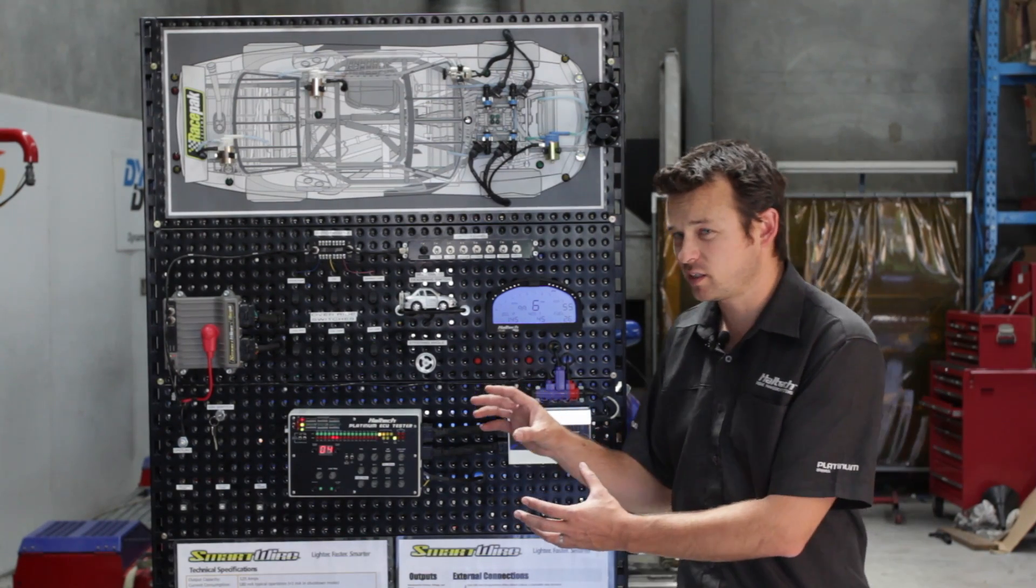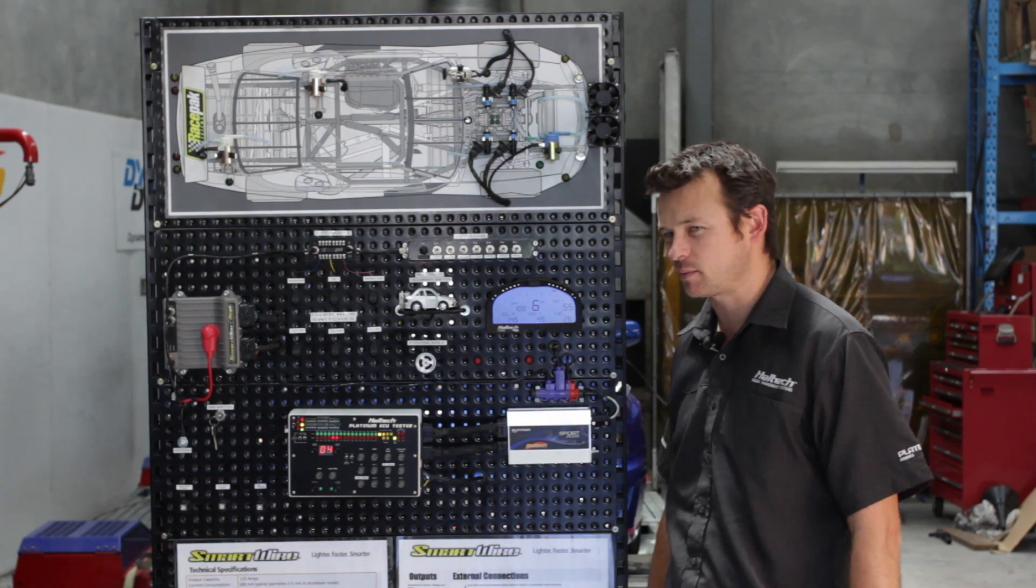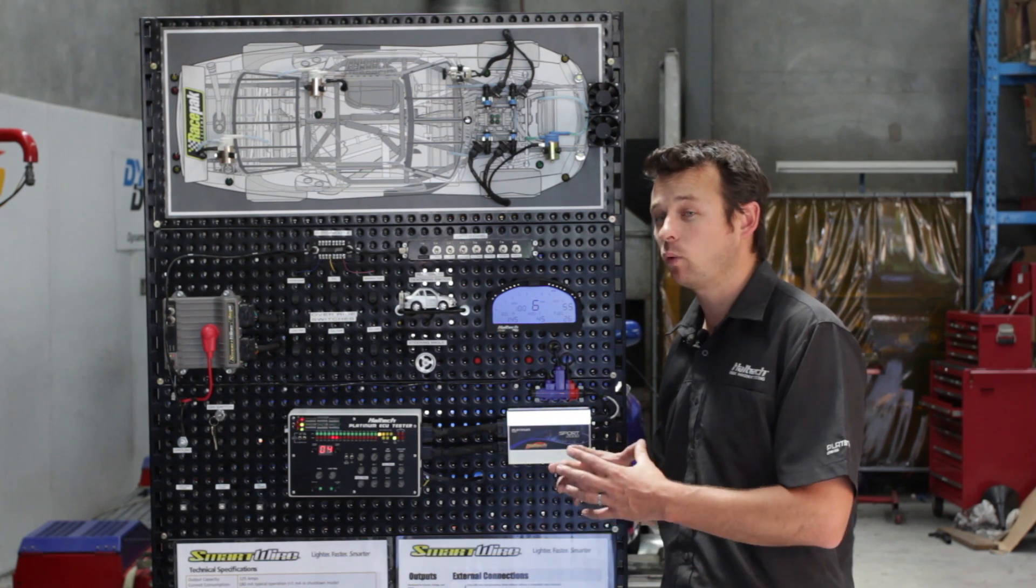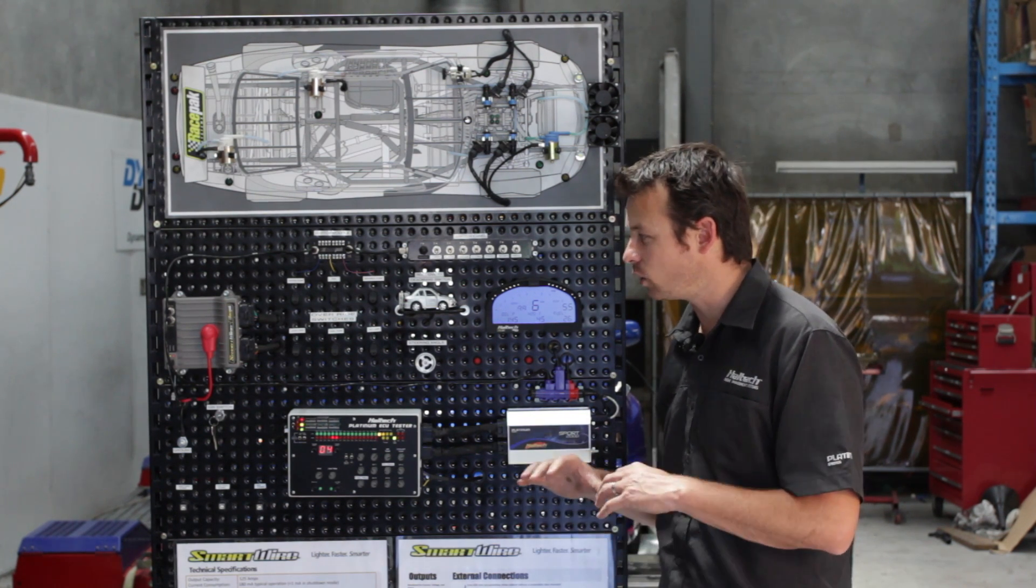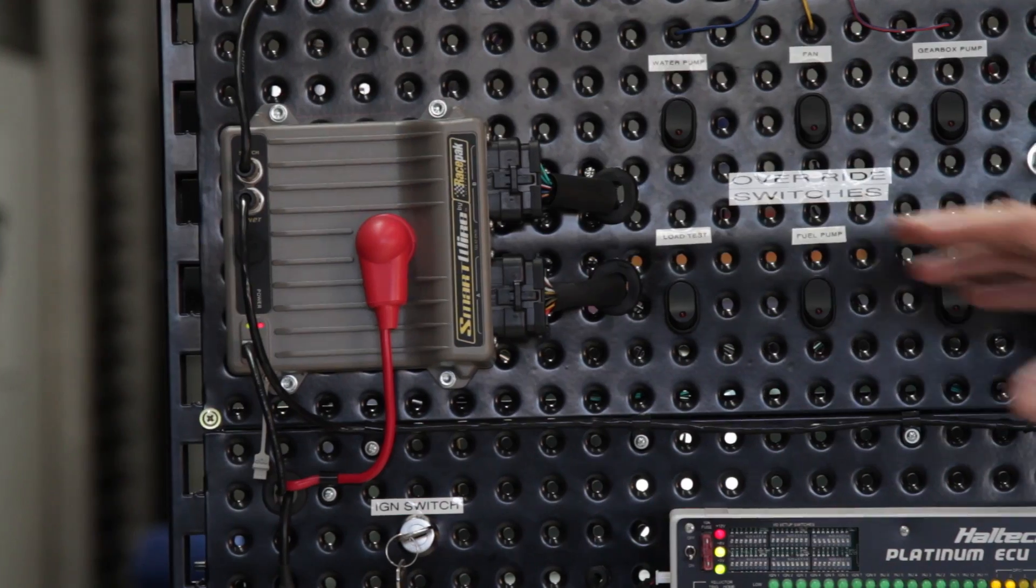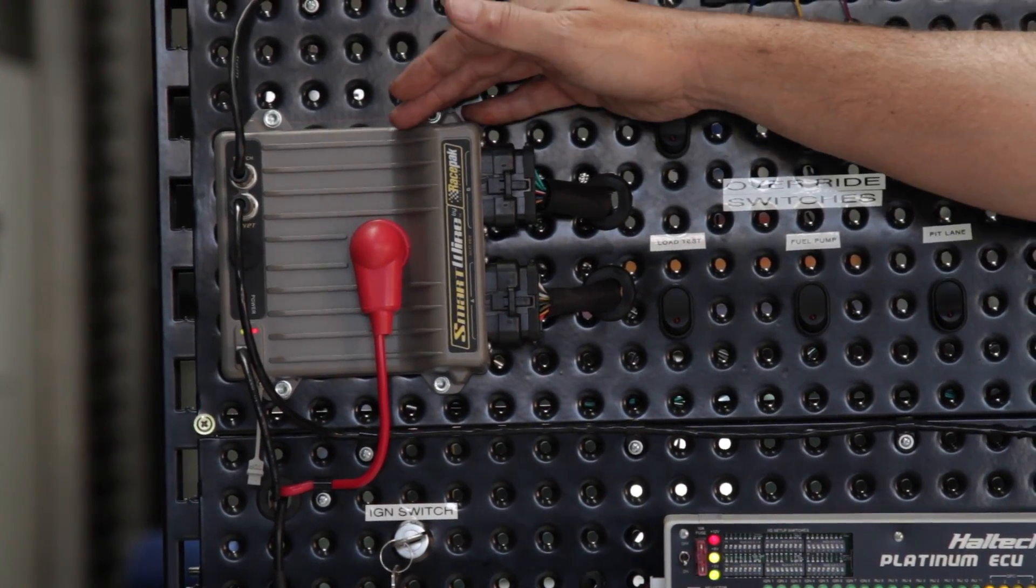Okay, so we've had some questions. What exactly is this RacePak SmartWire thing that you have here? Well basically it's a power distribution module and what it allows you to do is do away with all of your fuses and all of your relays and plug them directly into the SmartWire.